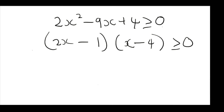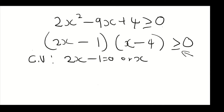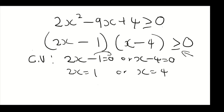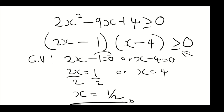Because we have an inequality, we need to find our critical values. So it's going to be 2x minus 1 equals zero, or x minus 4 equals zero. Transposing: 2x equals 1 or x equals 4. Dividing by 2 both sides, we get x equals one half. So we have two critical values: x equals one half and x equals 4.